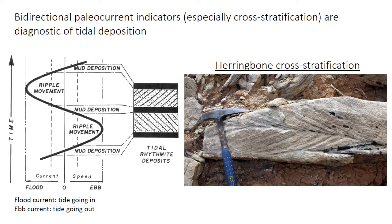This bi-directional cross-banding is often called herringbone cross stratification. When the current is faster, during the flood or ebb current, sand could be moved to form ripples or even dunes. The current velocity then drops to zero as the flow switches from incoming to outgoing — this is called slack water — and during this time, with very little energy, mud settles on tops of these ripples, forming a layer called a mud drape. This package — bi-directional cross beds separated by draping mud layers — is often called a tidal bundle.